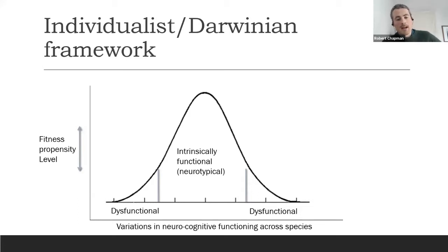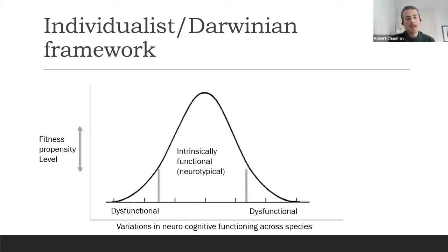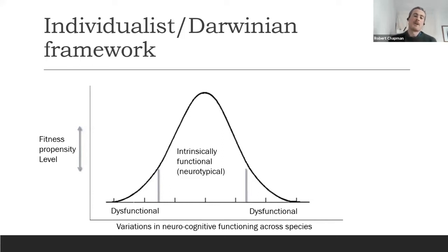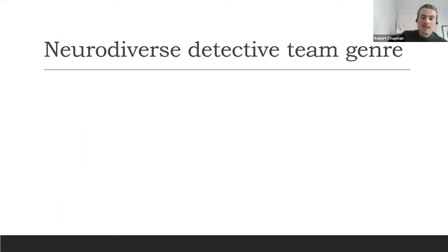This model is still lumbering on today, mainly because there isn't another model yet. But it runs into a lot of problems. The overriding problem is that it just doesn't work well when applied to human minds, because human minds aren't just individual organisms in competition with each other. This model might work well in evolutionary biology, but not with human minds.